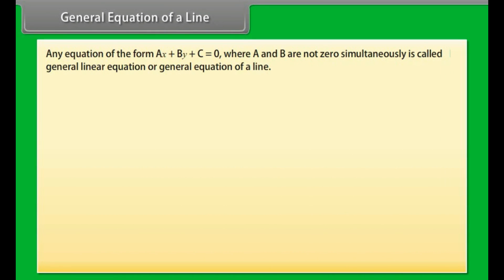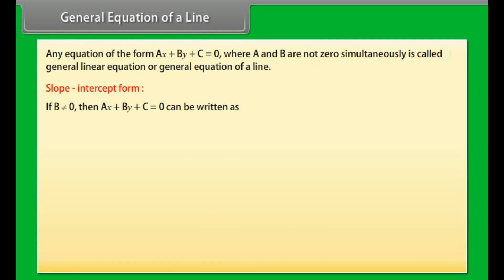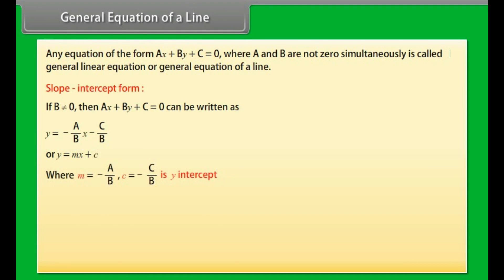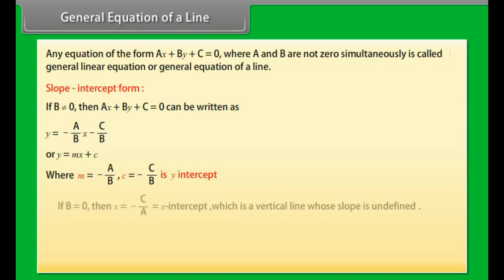General equation of a line: An equation of the form ax + by + c = 0, where a and b are not simultaneously zero, is called the general linear equation or general equation of a line. Slope-intercept form: If b ≠ 0, then y = (−a/b)x − (c/b), or y = mx + c where m = −a/b and c = −c/b is the y-intercept. If b = 0, then x = −c/a is a vertical line whose slope is undefined.